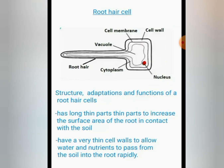Here we want to look at the root hair cell. This is the structure of the root hair cell. Again, on the root hair cell we have the cell wall, then the cell membrane, then at the center we have the vacuole, then the nucleus, and the cytoplasm.